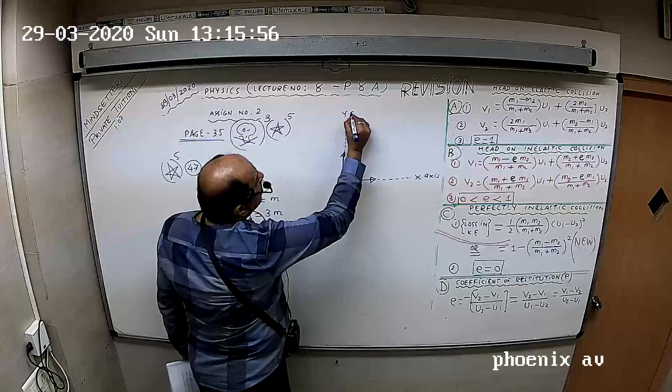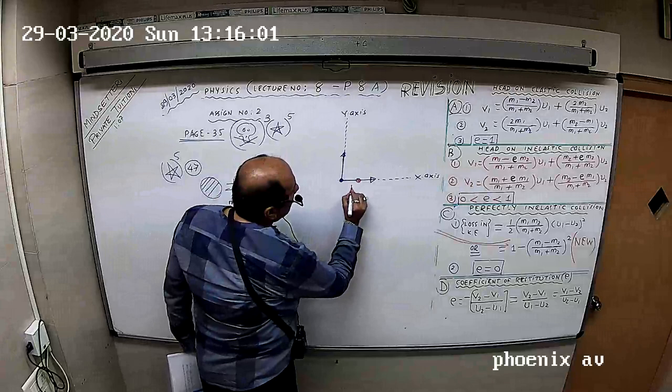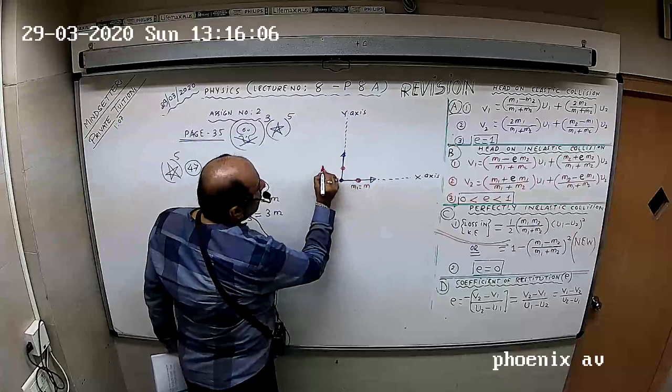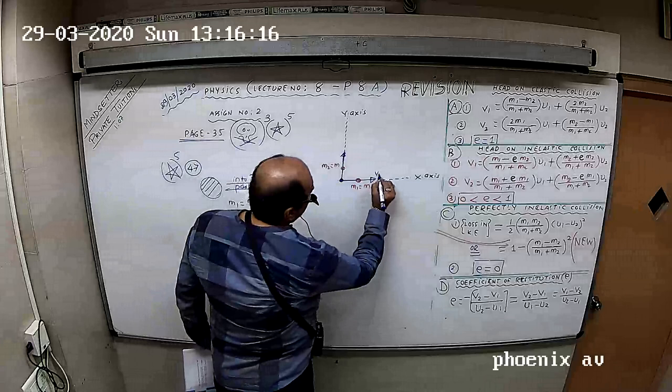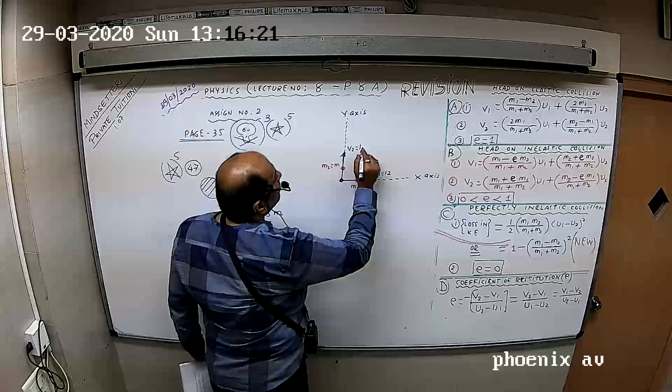I will say mass 1 which is M here, and mass 2. This is the origin. This velocity is 12 meters per second. This velocity is 12 meters per second.